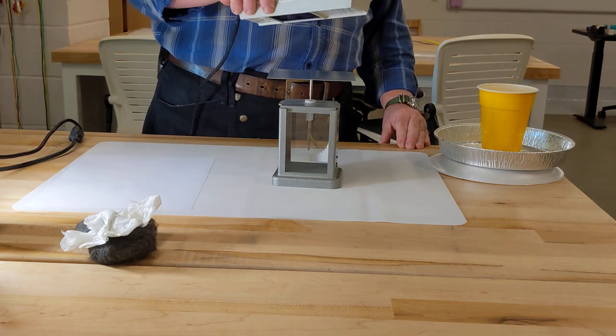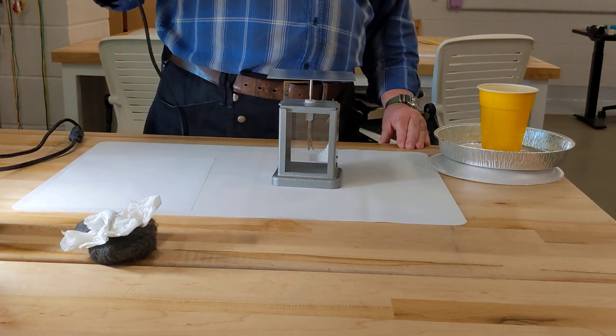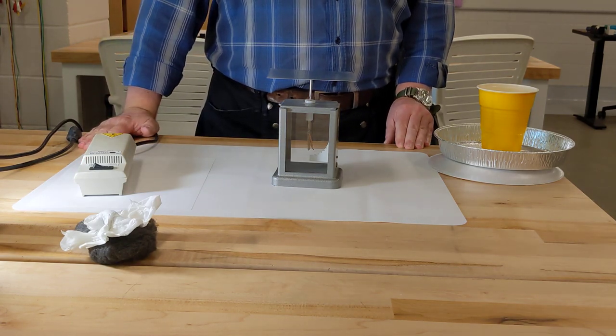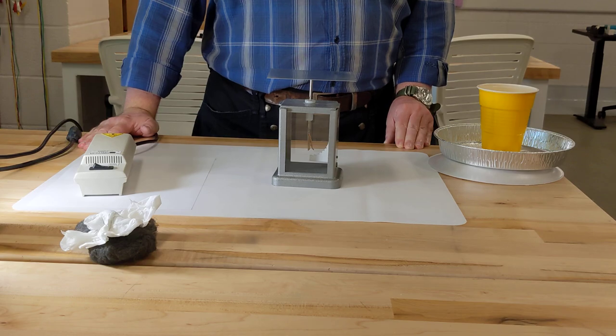And now when I bring the UV light next to it, those electrons are blown off the surface discharging the electroscope. Cheap and dirty photoelectric effect.